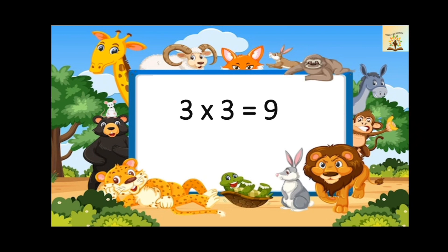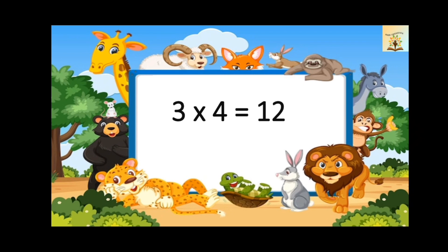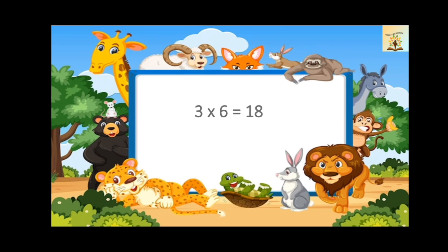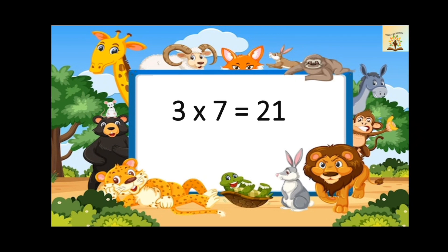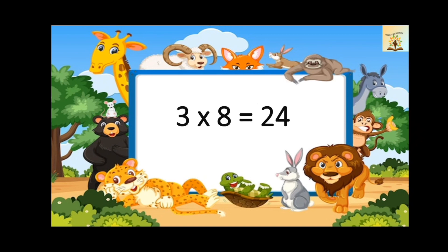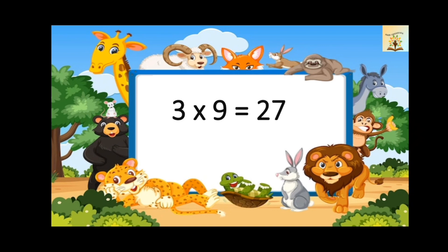Three threes are nine. Three fours are twelve. Three fives are fifteen. Three sixes are eighteen. Three sevens are twenty-one. Three eights are twenty-four. Three nines are twenty-seven.